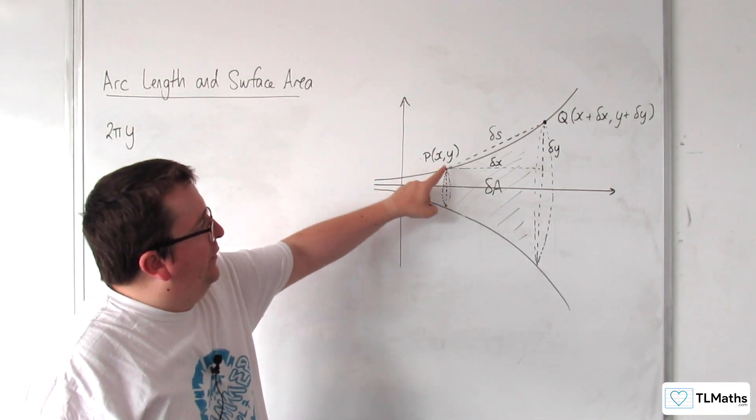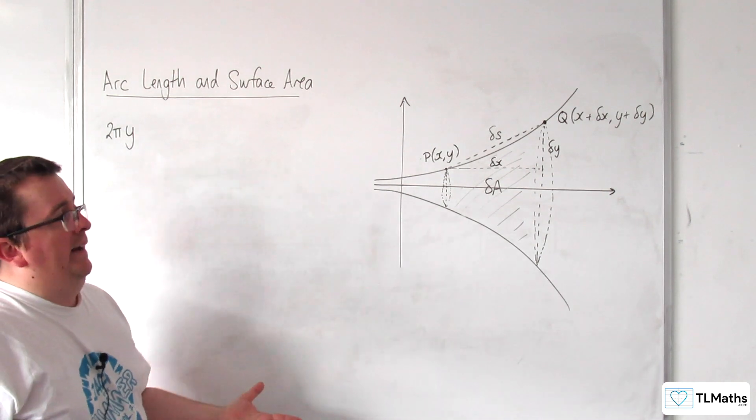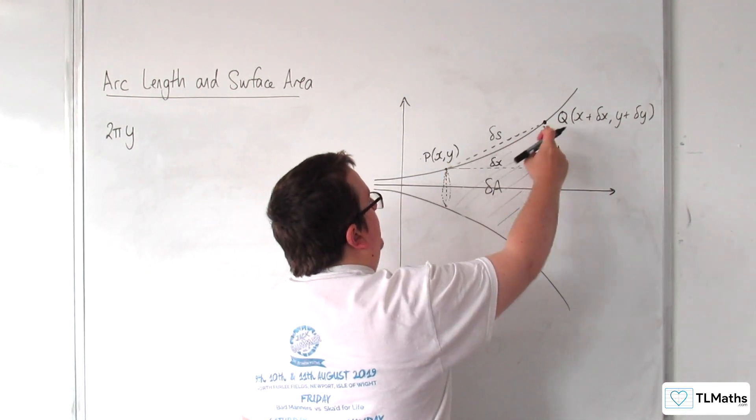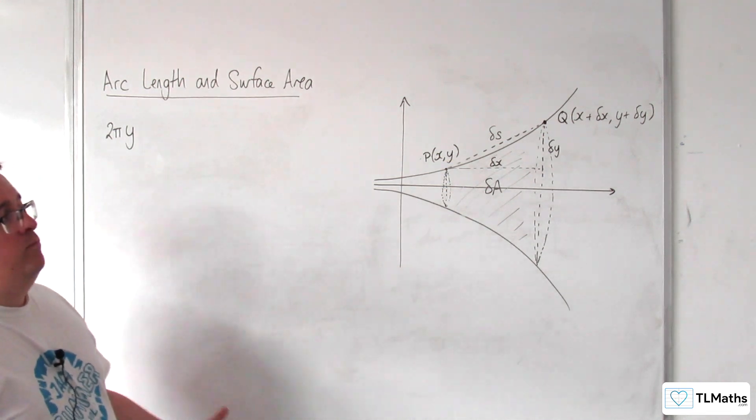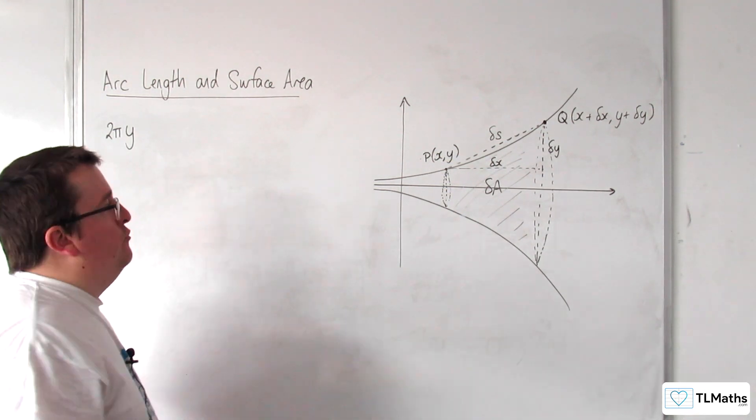So that would be the circumference of that circle. And if we multiplied that by delta S, then that would give us an approximation to the size of that area.